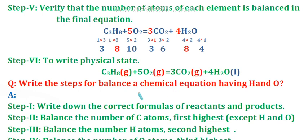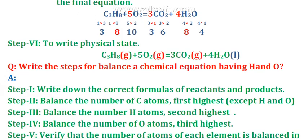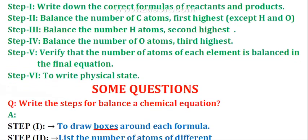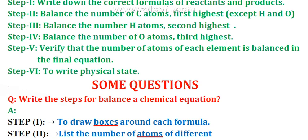Now we are revising the steps for balancing a chemical equation having H and O. The steps required are: step one — write down the correct formulas of reactants and products; step two — balance the number of carbon atoms first, the highest, excluding H and O; step three — balance the number of hydrogen atoms, the second highest; step four — balance the number of oxygen atoms, the third highest; step five — verify that the number of atoms of each element is balanced; step six — write the physical state to make the equation more informative.